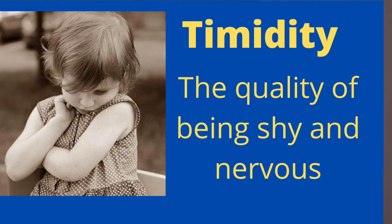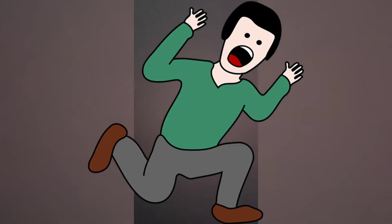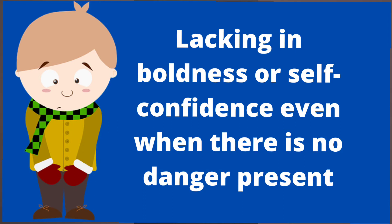The third one is timidity — the quality of being shy and nervous. So the difference between cowardice and timidity is: cowardice means fearful in the presence of danger and running away or not facing the situation. Timid means lacking in boldness or self-confidence, even when there is no danger present. Timidity is associated with feelings of apprehension, lack of confidence or awkwardness.